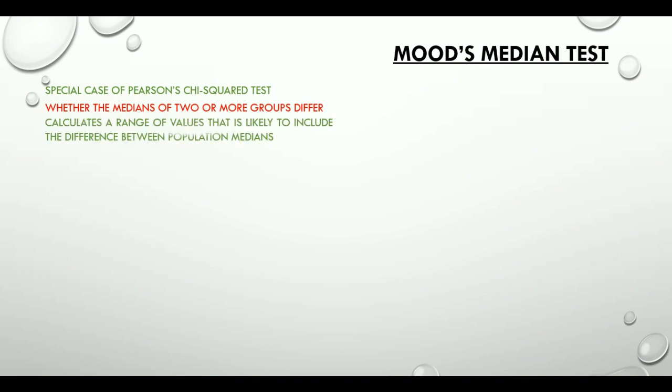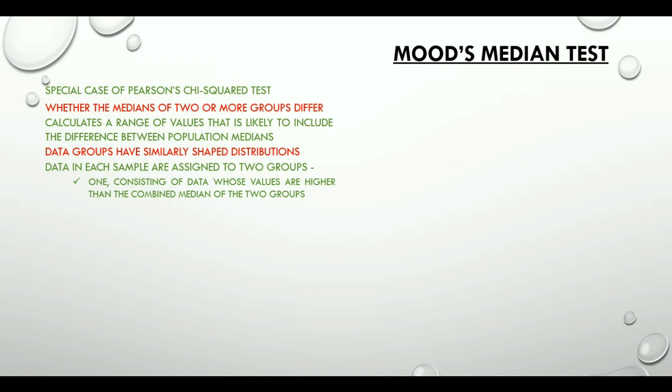So, Mood's median is actually a special case of Pearson's chi-squared test. It tests whether the medians of two or more groups differ and also calculates a range of values that is likely to include the difference between population medians. In this test, different data groups have similarly shaped distributions and data in each sample are assigned to two groups. One consisting of data whose values are higher than the combined median of the two groups and the other consisting of data whose values are at the median or below.